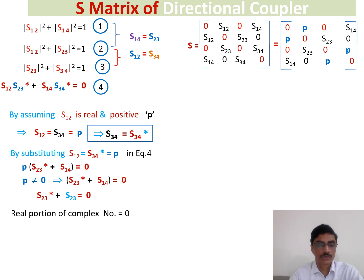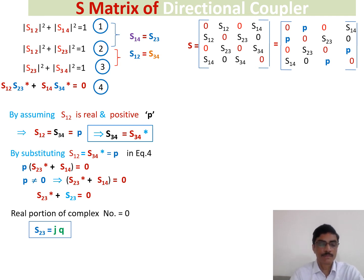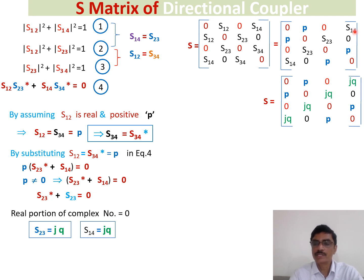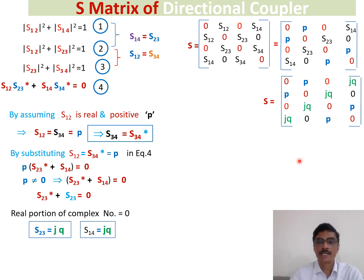So S23 is purely imaginary, written as jq, where jq represents the complex number. Substituting this value, S23 equals S14 equals jq, and S12 equals S34 equals P. The final S-matrix of the directional coupler is therefore expressed in terms of P (real value) and jq (imaginary value). This is the final S-matrix of a directional coupler. Thank you.